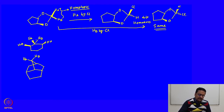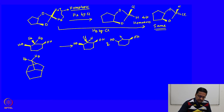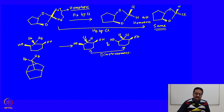Let us try to see what happens if we replace HA and HB separately by chlorine in the next example — we would get two different molecules. What we see here is these two are chiral compounds, but they are a pair of diastereomers because they are not related by any mirror image. So these two hydrogens are diastereotopic.